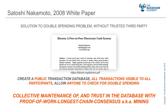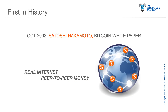It's all done with proof-of-work longest chain consensus, also known as mining. We'll come back to that in length in section 1.2. The result of this invention is a system that, for the first time in history, created a real equivalent of cash for the internet, allowing participants to make trustless and direct person-to-person payments over the internet without the intervention of a trusted third party.